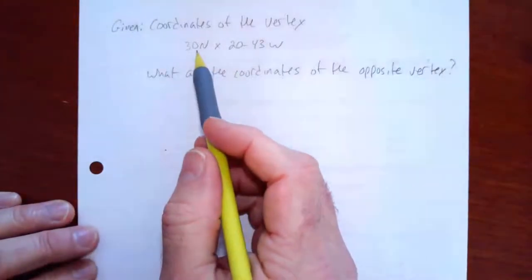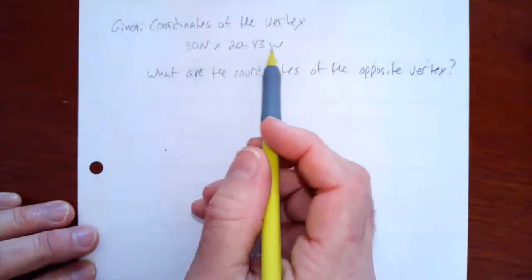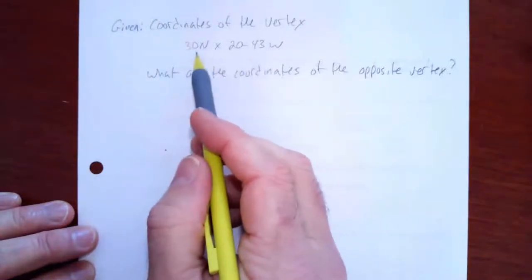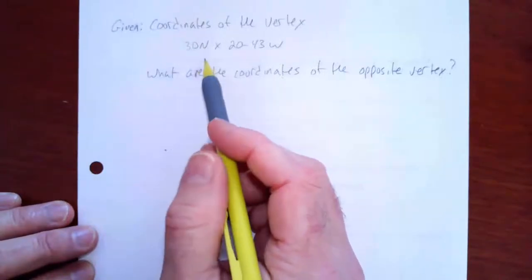So in this problem, we're given a vertex in the northern hemisphere of 30 degrees north by 20°43' west. So let's just tackle this part first. If your vertex is 30 degrees north, then your vertex in the other hemisphere is going to be 30 degrees south.